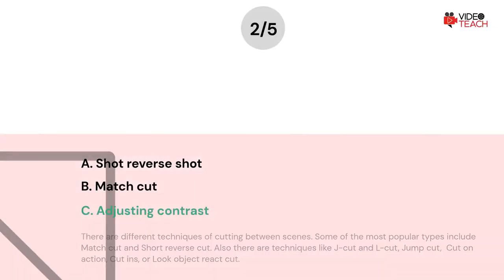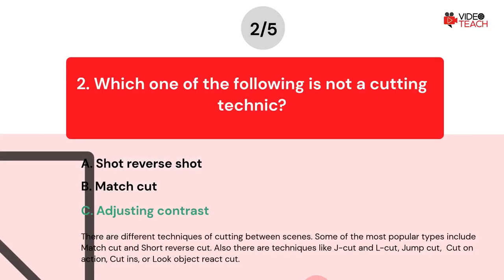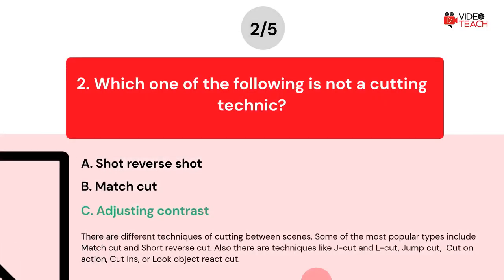The correct answer is option C. There are different techniques of cutting between scenes. Some of the most popular types include match cut and shot reverse cut. Also there are techniques like J cut and L cut, jump cut, cut on action, cut ins, or look object react cut.